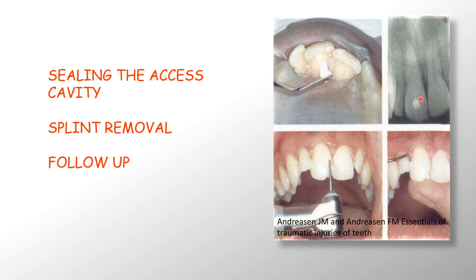The access cavity is sealed using intermediate restorative material, as you can see in the radiograph. Once the cavity has been sealed and this initial endodontic therapy is over, the splinting material is removed using a fissure bur. It is very important to remove the splint after 7 days in order to allow functional movement of the re-implant and to reduce the risk of ankylosis.